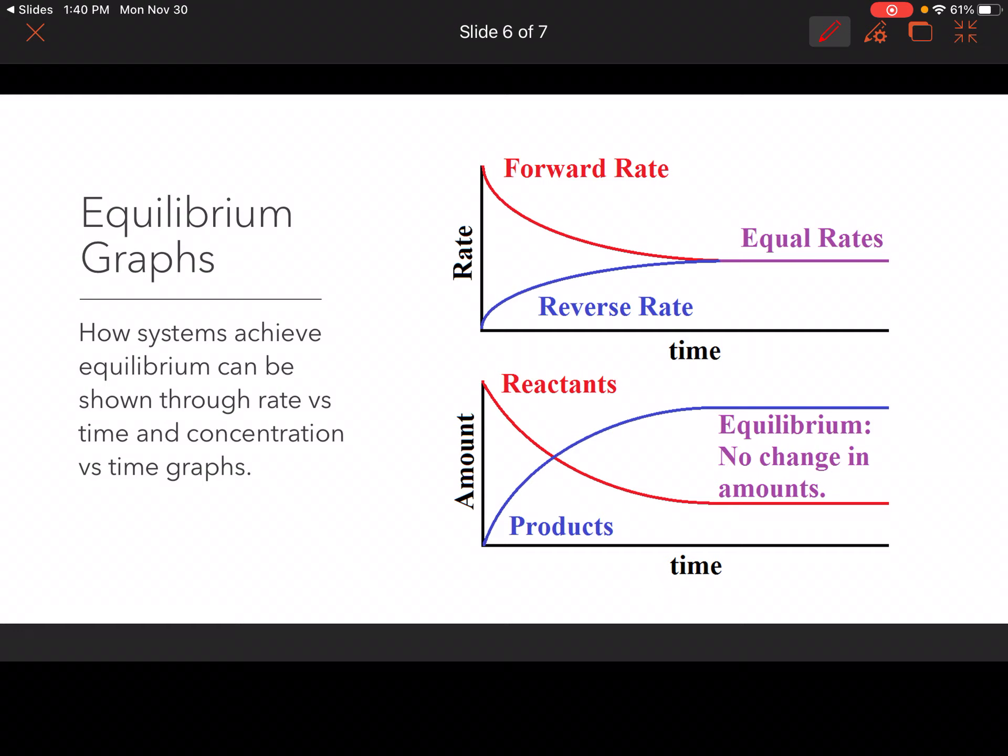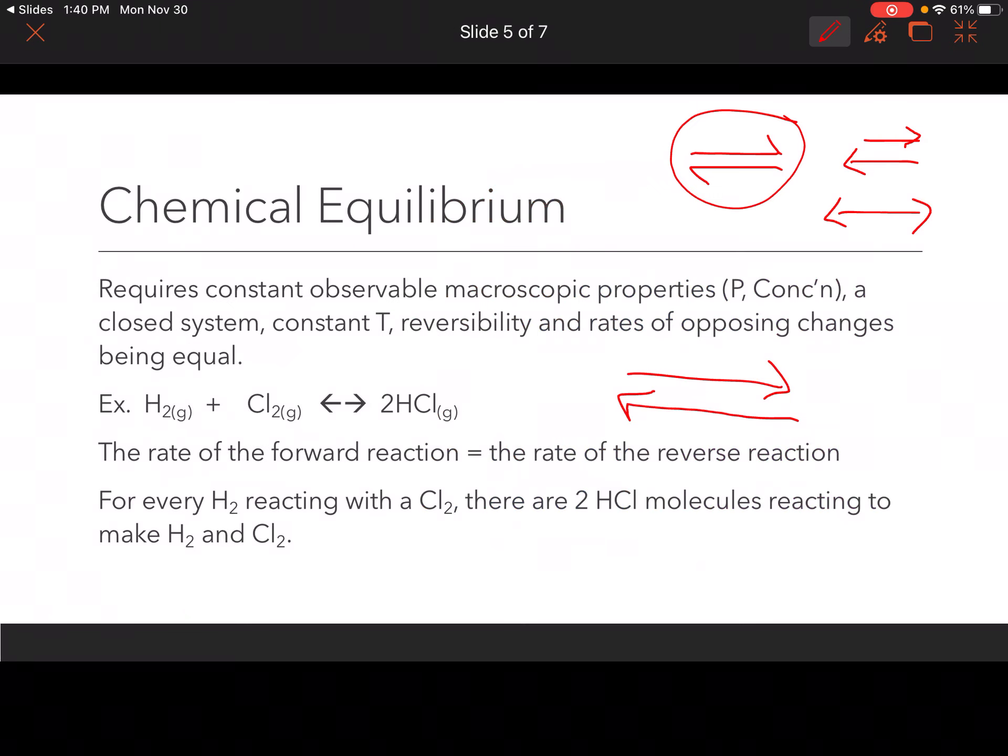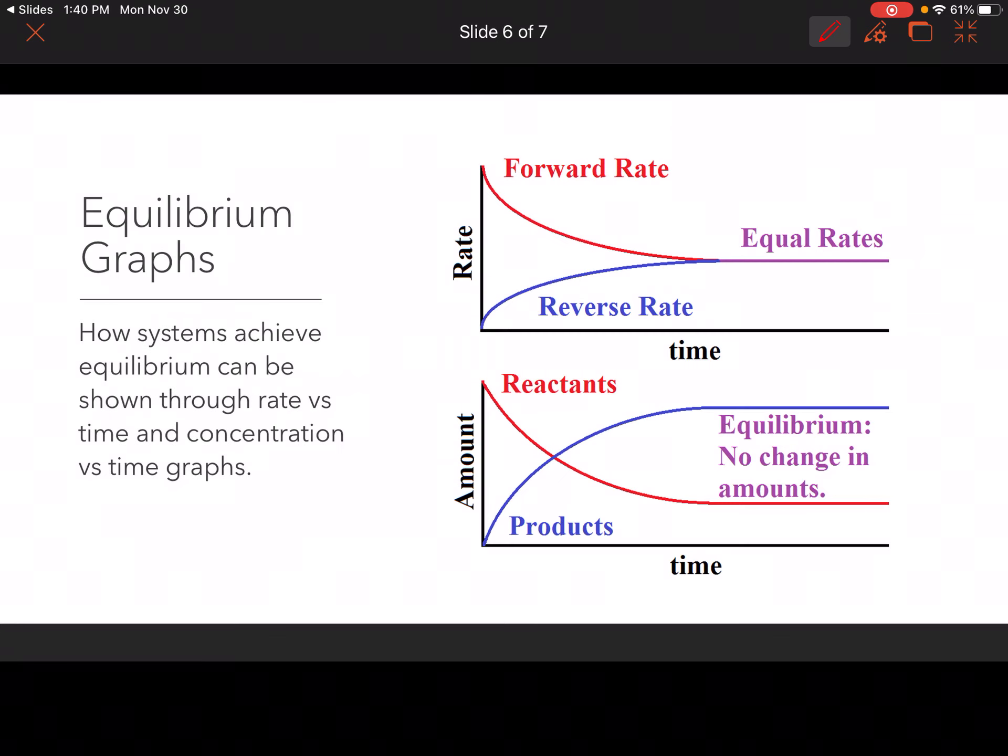Now we have graphs, so we can show this graphically. So how systems achieve equilibrium are shown usually through two different types of graphs. So we've got the rate versus time, which is your first one. Now I just finished saying that when equilibrium is achieved, the rates of opposing changes have to be equal. So the rates are going to be equal. So the rate versus time graph, when you get this plateau here, when those rates are equal, that's how you know you've achieved equilibrium then. So the forward reaction, the rate of it is equal to the reverse reaction.